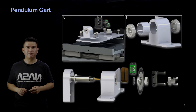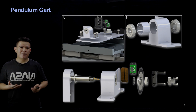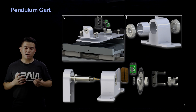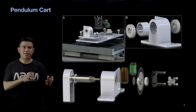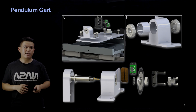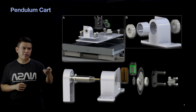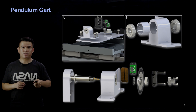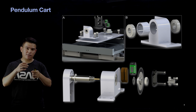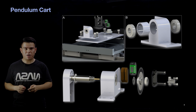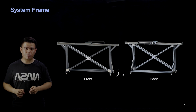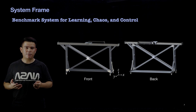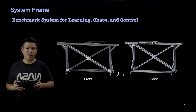The pendulum cart connects the pendulum arm and the linear motor together. As you can see, we have an additional encoder sensor attached to the bearing housing so that it can detect the rotational angle of the first pendulum arm. When we put everything together and assemble it into a system frame, we finally have a benchmark system for learning, chaos, and control.